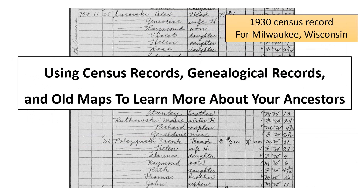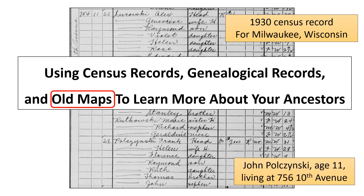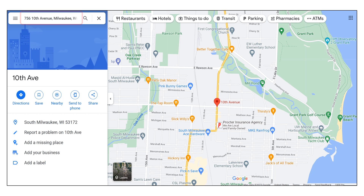We also see that Frank Luchak was probably the cousin of Stefan Luchak, although there is currently no genealogical evidence to support this. Moving on from genealogical records, let's see what other information about our ancestors can be derived from old maps. We'll start by trying to find John Polchensky's home in 1930 at 756 10th Avenue in Milwaukee, Wisconsin. Here's a Google Map search for 756 10th Avenue, but this doesn't seem to match up with where the Polchensky's relatives were known to have lived in the 1930s.